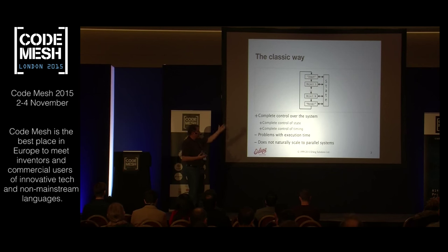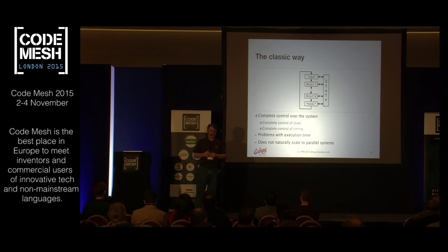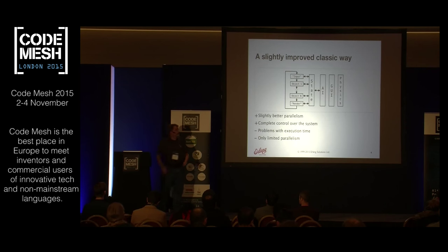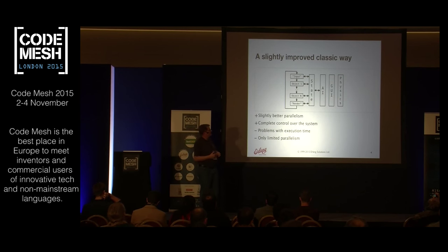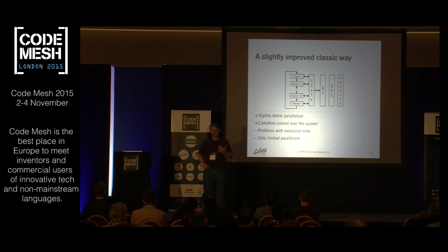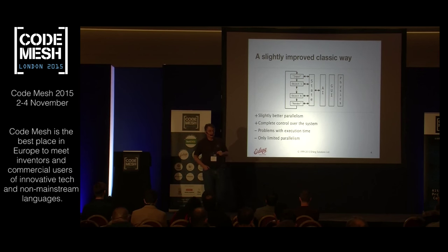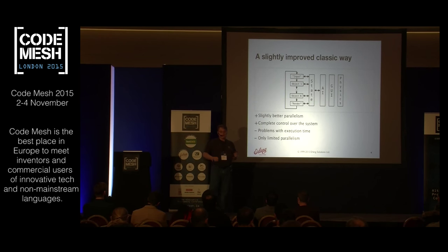Another problem is that while it's nice, this approach doesn't scale to parallel systems. What exists now is a slightly improved classical way: you still have a central processing loop going through objects, but you might have parallel threads on a multi-core machine doing other specific things. You can move graphics out of your main loop onto another core, and similarly move AI and physics out, so they run more or less in parallel.